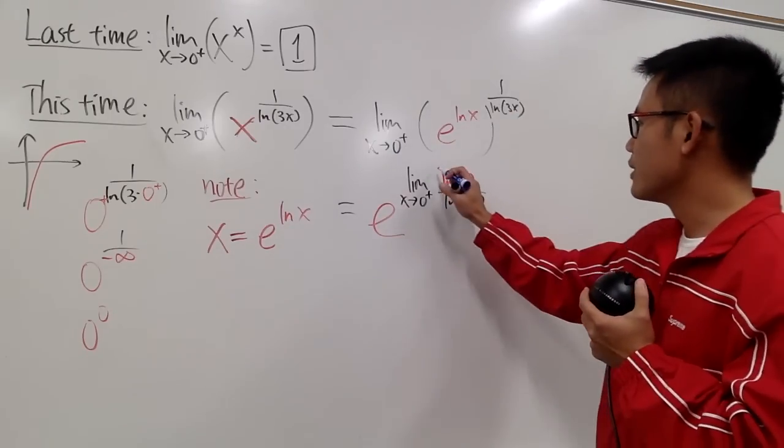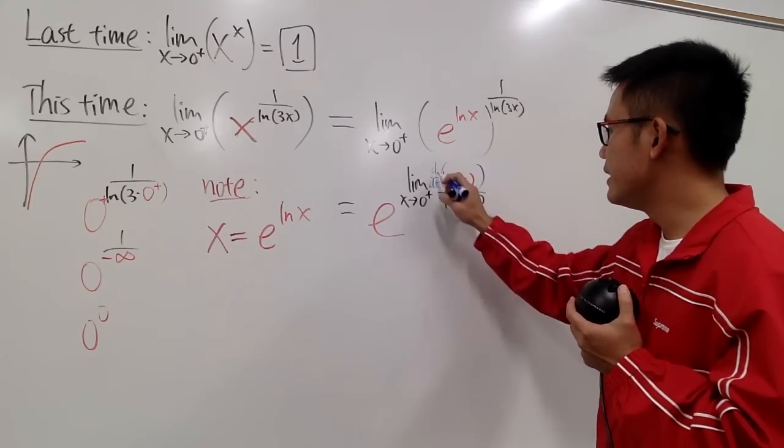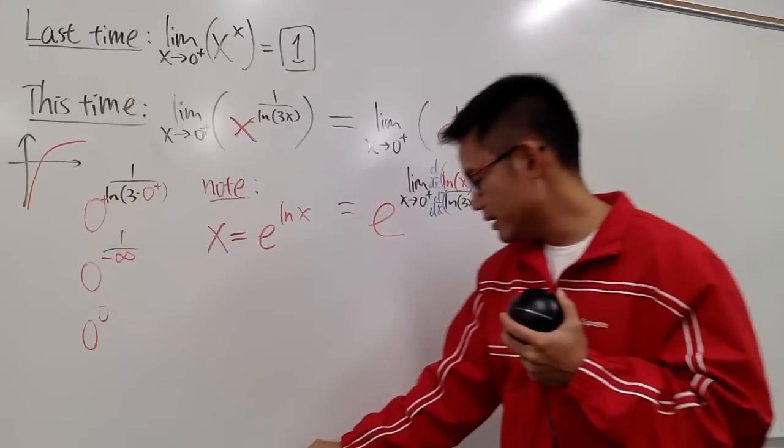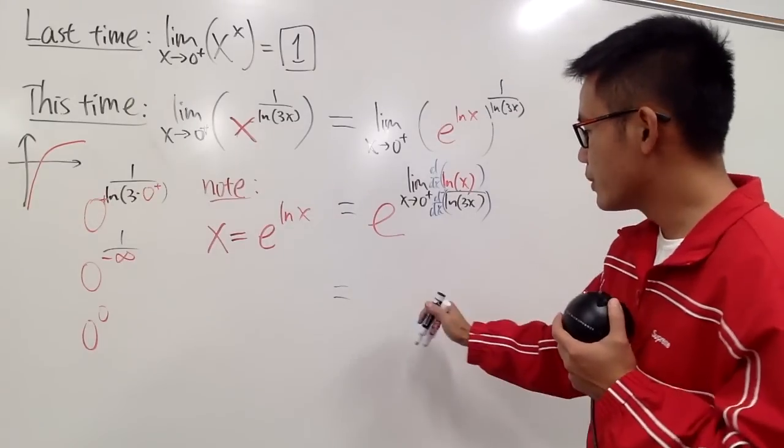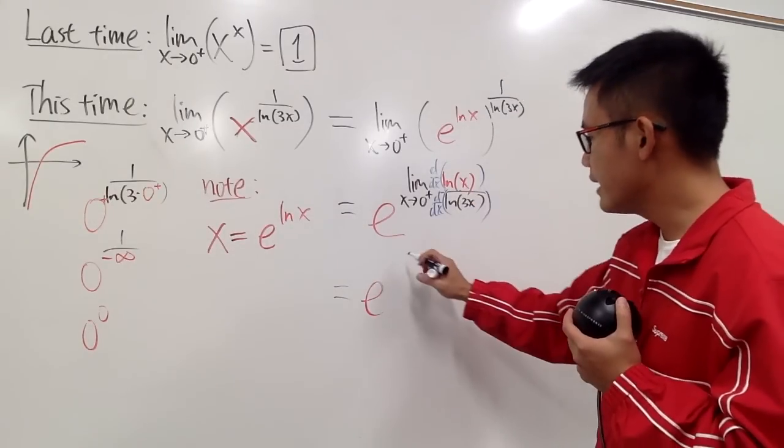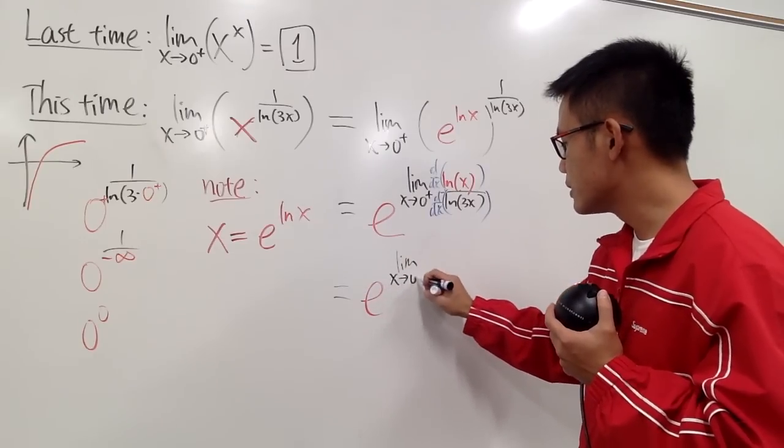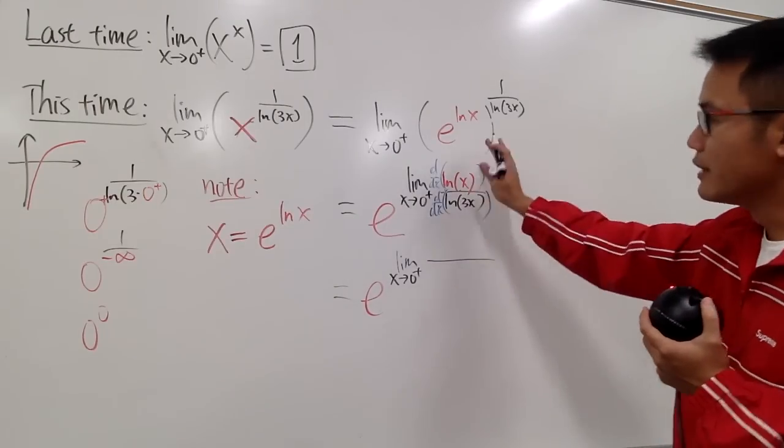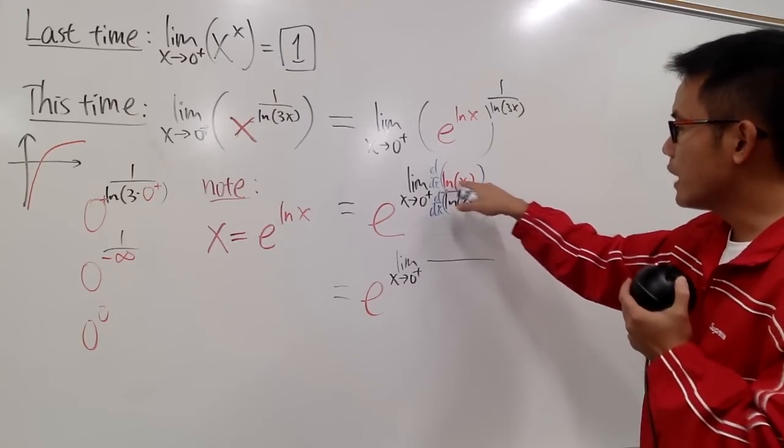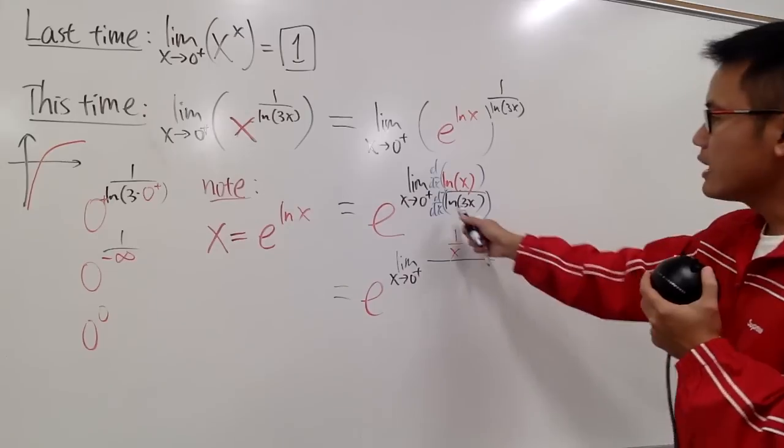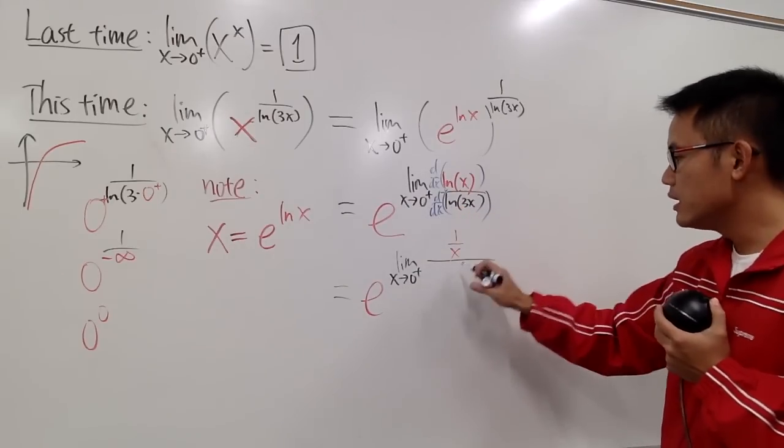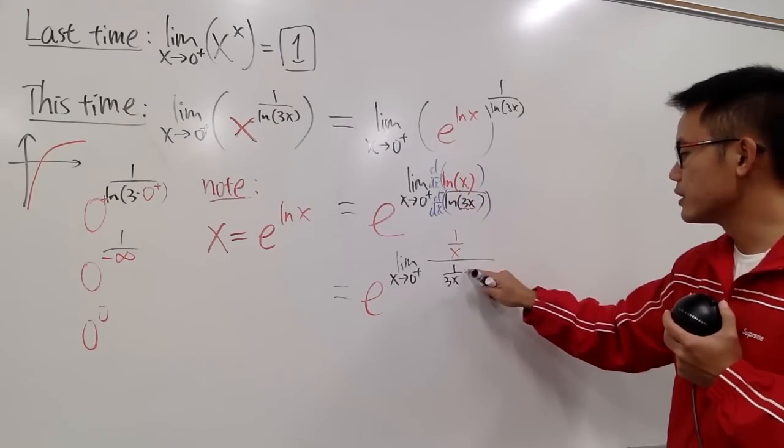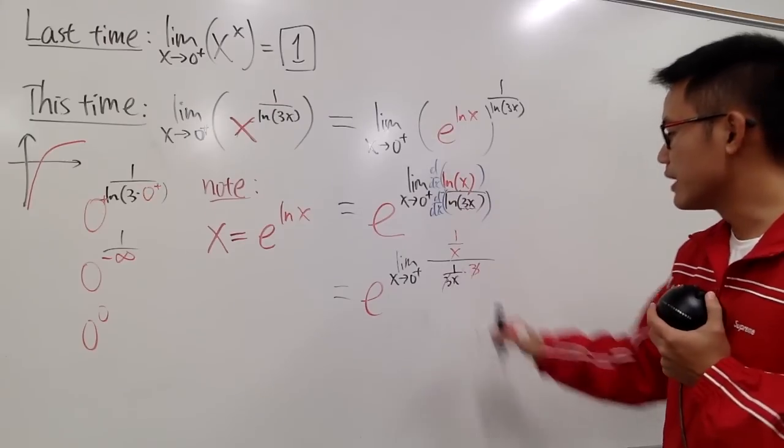So L'Hopital's rule in action. We will differentiate the top, and then we will differentiate the bottom. I know I can change this, but it doesn't really matter that much. This is equal to e for the base. We still take the limit as x goes to 0 plus. I know this is the same as ln 3 plus ln x, but let me just do the derivative as how it is. Anyway, on the top, the derivative of ln x is just 1 over x. On the bottom, the derivative of ln 3x is 1 over 3x, but by the chain rule, we multiply by the derivative of that, which is just a 3. And you see 3 and 3 cancel, we still get this.